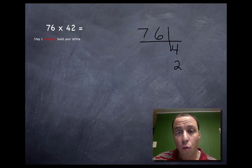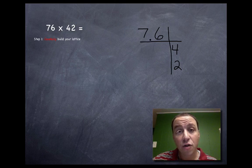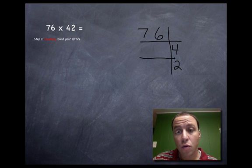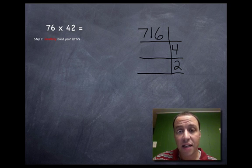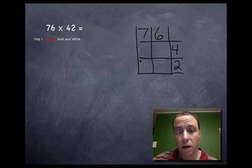So 42, and then I'm going to put another border right there. And now you kind of start to construct the lattice. Each one of these numbers is going to be in their own little box, so if you see I underline the four, I underline the two, and then I sideline the six and I sideline my seven.